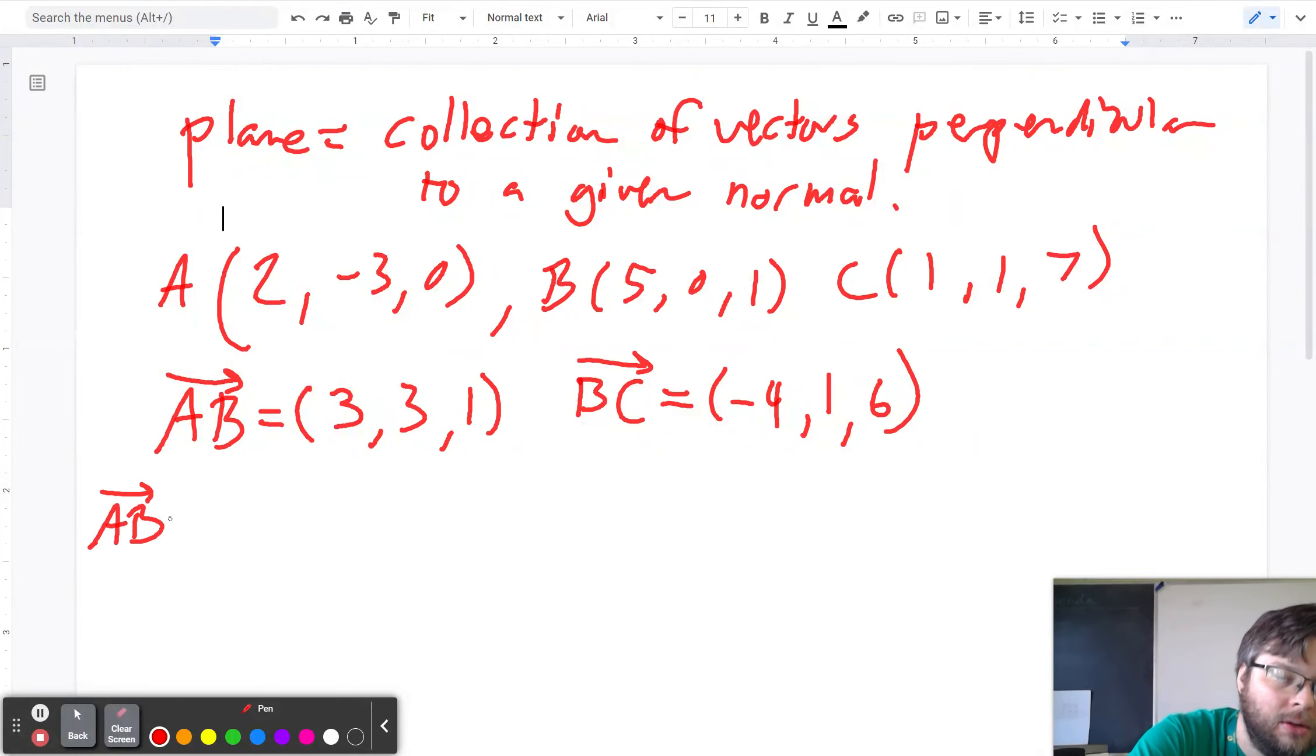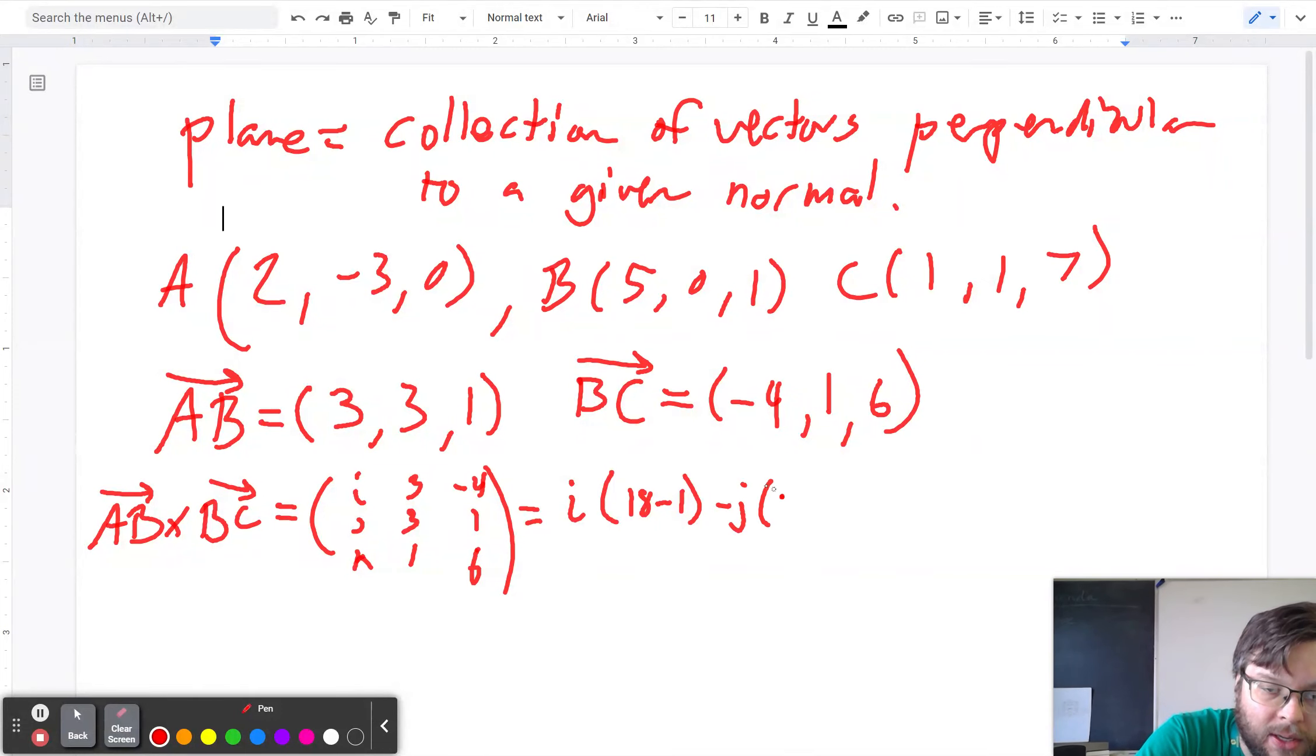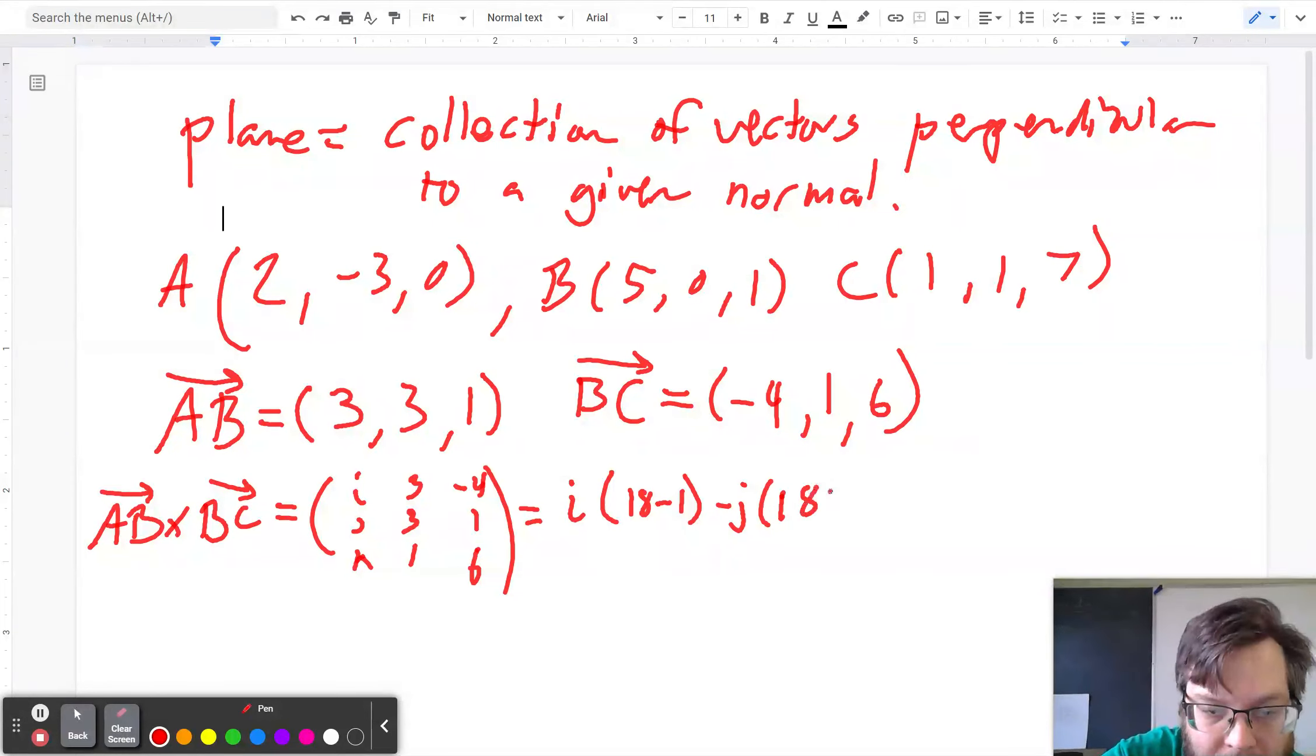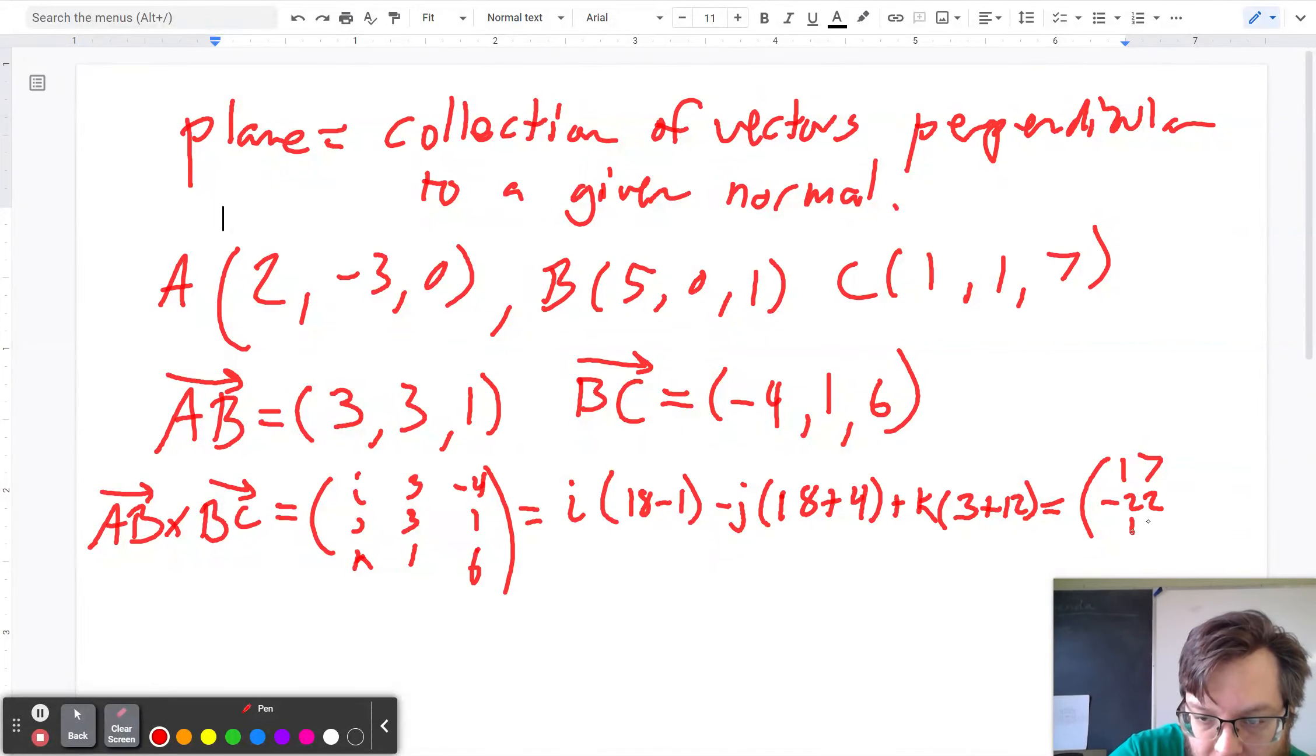So AB cross BC is i, j, k, the determinant, 3, 3, 1, -4, 1, 6. So i times (3 times 6 minus 1 times 1) minus j times (3 times 6 minus -4 times 1) plus k times (3 times 1 minus -4 times 3). So that gives me the vector (17, -22, 15). So this is my normal vector.